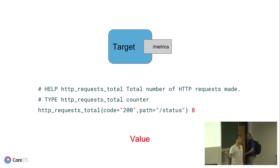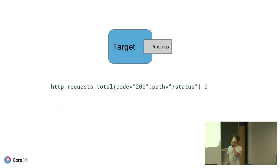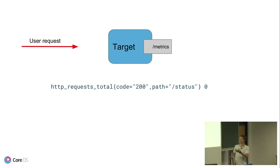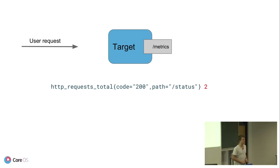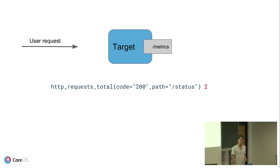You can develop the exposition format yourself or use the client libraries that Prometheus offers. A request comes in, you increase your counter. When the next request comes in, you increase it again. Nothing crazy, no magic. Why is it not about logging? With logging, you want to identify every single request. Prometheus just gets snapshots of that data and doesn't know about every single event. So it's really just about metrics.